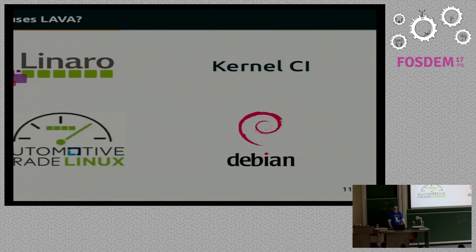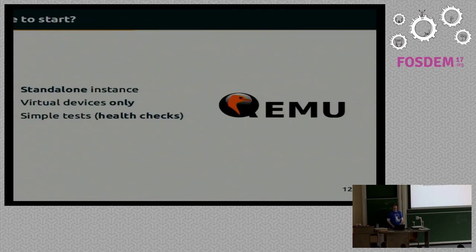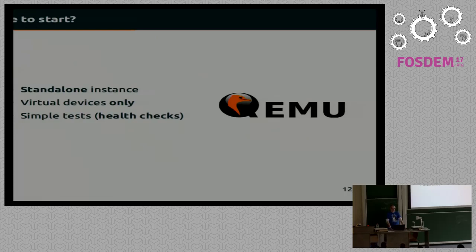So, once we've all realized what we can get from our own LAVA laboratory, let's go to the actual setup. For a start, it's best to focus on a standalone instance with no remote workers and no distributed environment. A standalone instance will allow you to get the most out of LAVA as quickly as possible. We will also focus just on virtual devices, and the tests should be as simple as possible — just health checks if nothing else comes to you during setup.